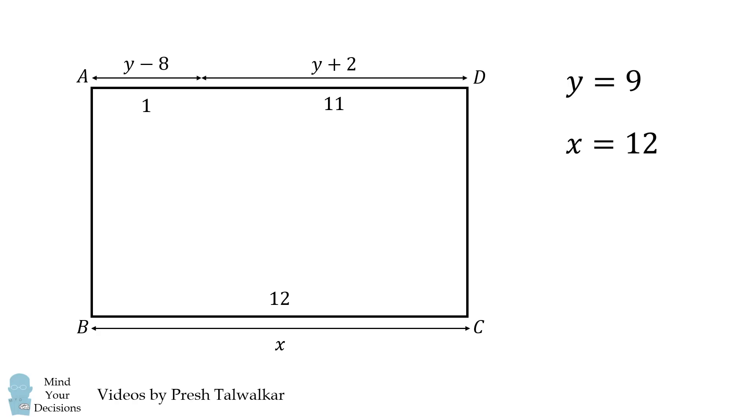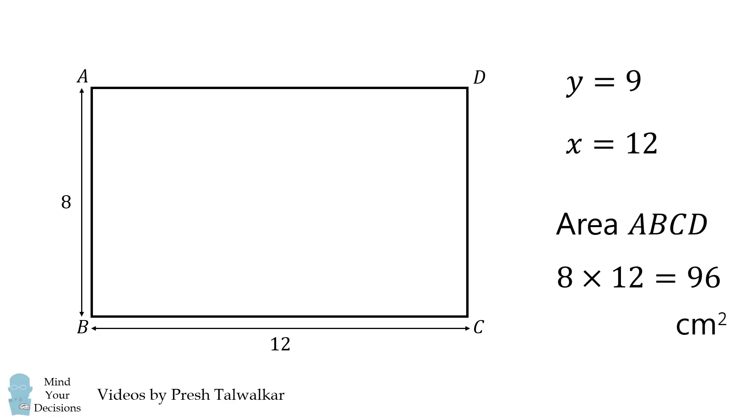We then have x is equal to 12. The length of AB is equal to x minus 4, which means AB is equal to 8. So, it seems like we can calculate the area of ABCD as follows: It's equal to 8 times 12, which is equal to 96 square centimeters. This would seem to be the answer, but it's not correct.